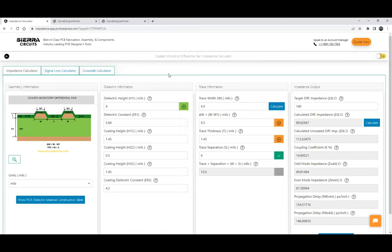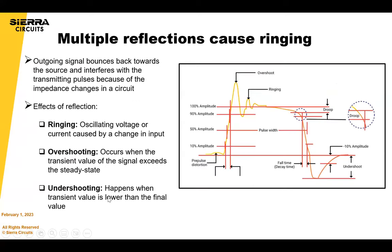To do the loss and crosstalk calculation, you need to first enter parameters in the impedance calculator, as the dielectric and trace information is taken from there, and then you can move on to the loss and crosstalk calculation. We'll talk about loss and crosstalk further in the webinar. Moving on to reflections and ringing: multiple reflections cause ringing. Whenever the impedance changes in a circuit, the outgoing signal bounces back toward the source and interferes with the transmitting pulses.